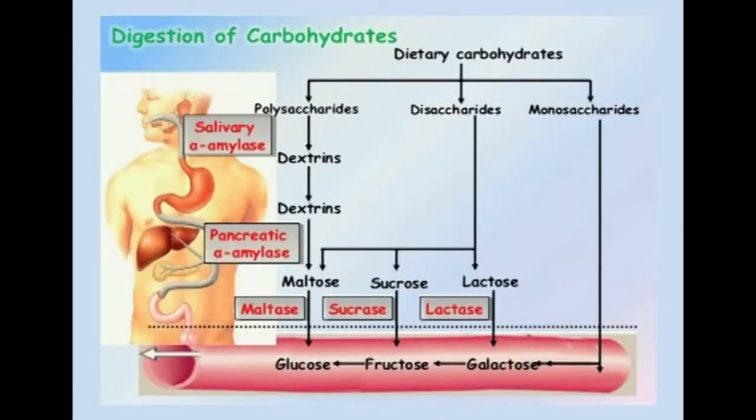To summarize digestion of carbohydrates: dietary carbohydrates — polysaccharides, disaccharides, and monosaccharides — are processed by salivary and pancreatic alpha-amylase, which act on polysaccharides (predominantly starch) to yield dextrins and maltose. Maltase then converts maltose to glucose. Disaccharides — sucrose and lactose, in addition to maltose — are broken down to yield glucose, fructose, and galactose. Monosaccharides are directly absorbed.